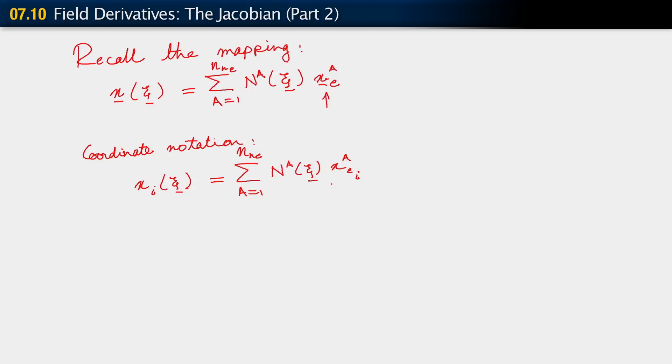Okay, from here, just as we did in the 1-D problem, we can go ahead and compute partial of xi with respect to xi capital I. Which is just sum over the nodes in the element now: Na comma capital I, x a e i.